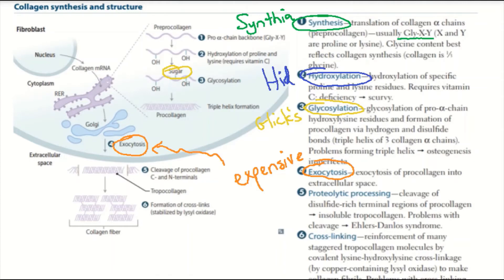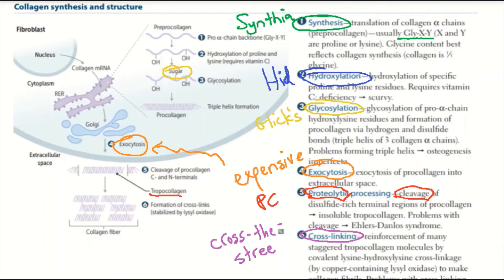Next, we're up to proteolytic processing and cleavage, represented by 'PC.' The cleavage happens in disulfide-rich terminal regions of procollagen, which results in tropocollagen. Finally, cross-linking is represented by 'cross the street.' This involves reinforcement of many staggered tropocollagen molecules by covalent lysine-hydroxylysine cross-linkage through lysyl oxidase.